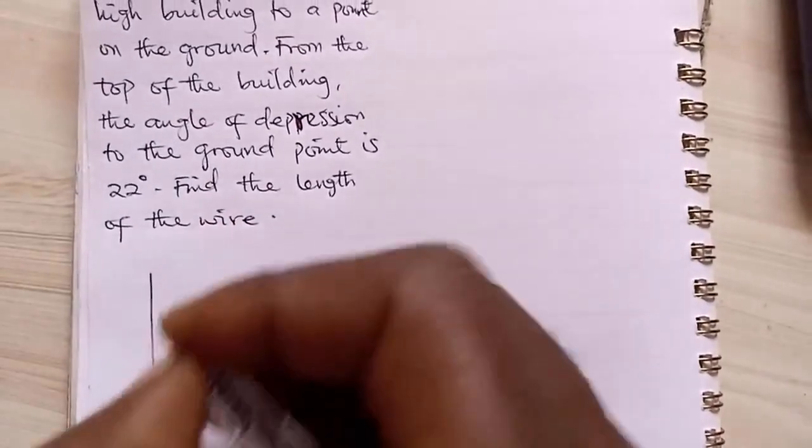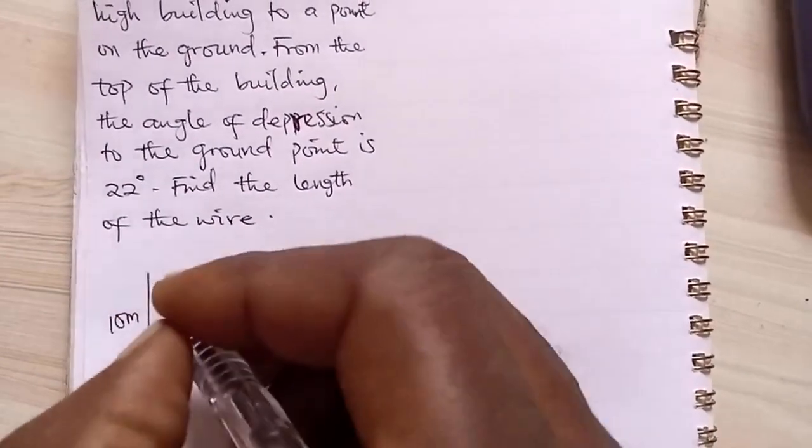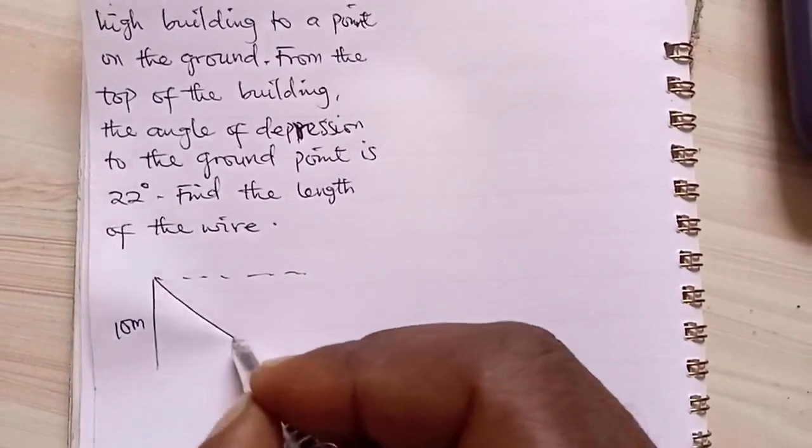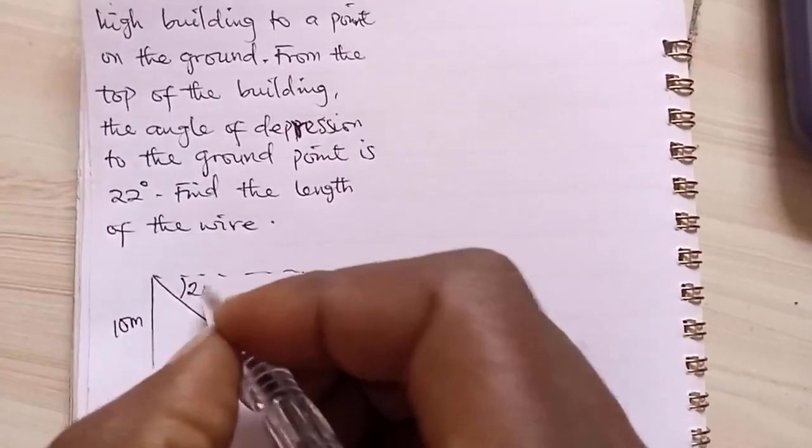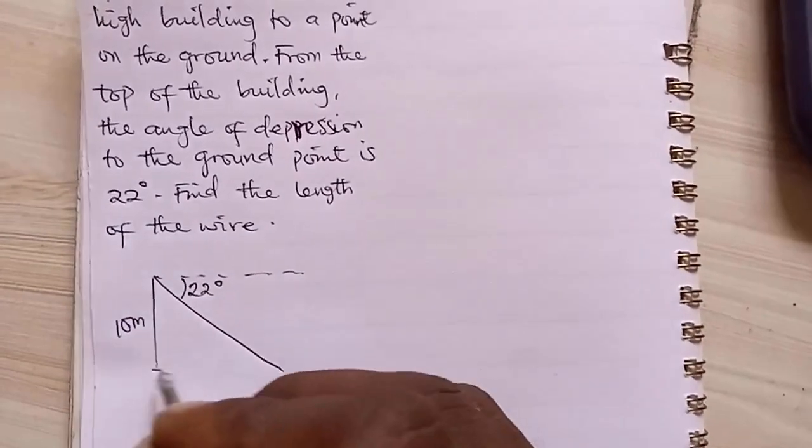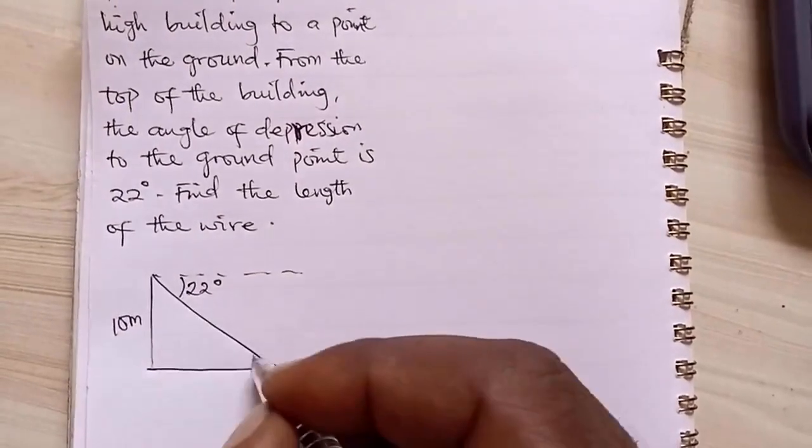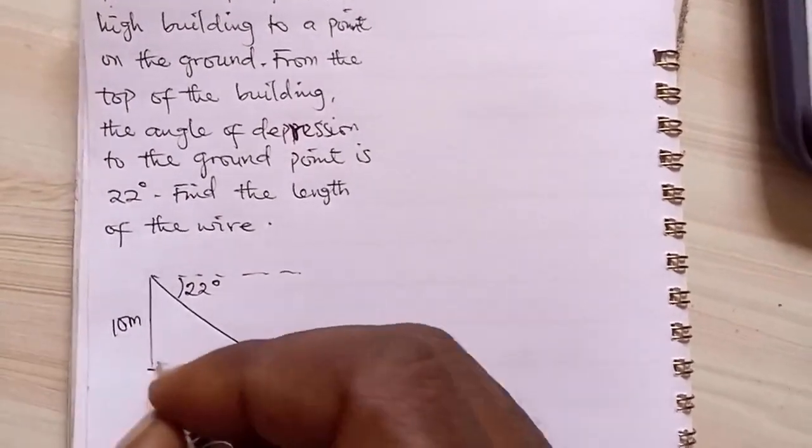Now, if this is the building, 10 meters, this is high level. It was stretched to the ground with an angle of 22 degrees. If this is the ground, it means this angle is also equal to this. And here is 90.